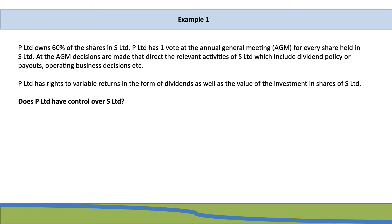Let's look at an example to determine whether a company has control. P Limited owns 60% of the shares in S Limited and has one vote at the AGM for every share held. At the AGM, decisions are made that direct the relevant activities of S Limited, including dividend policy and operating business decisions. P Limited also has rights to variable returns in the form of dividends and the value of the investment in shares of S Limited. Does P Limited have control over S Limited?